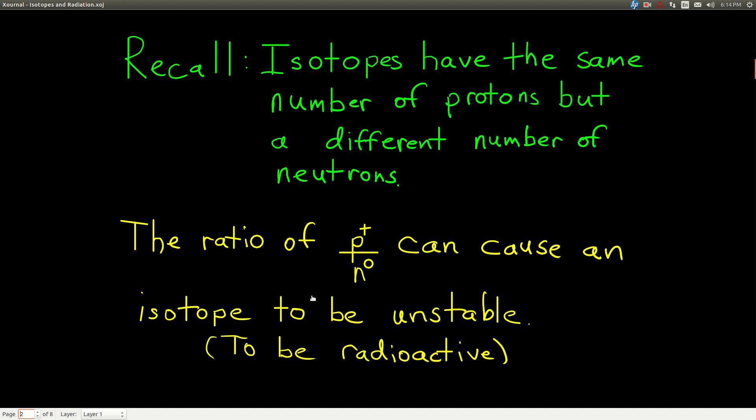Now, most of the isotopes of the elements up through potassium are stable, more or less. Most of the elements from calcium on through the rest of the periodic table have at least one unstable isotope. It's due, again, to this ratio of protons to neutrons.